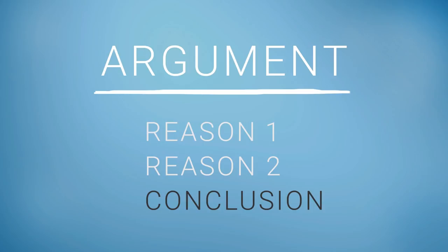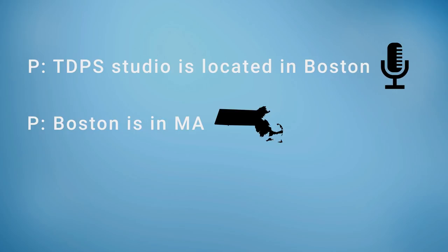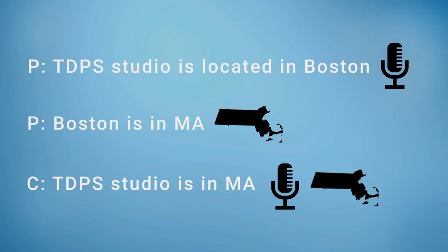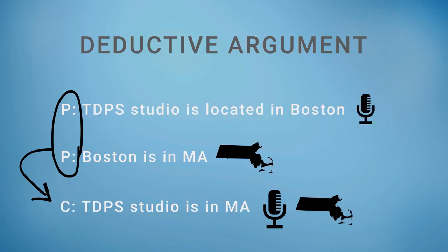The statements of your argument are called premises. Premise: the David Pakman Show studio is located in Boston. Premise: Boston is in Massachusetts. Conclusion: the David Pakman Show studio is in Massachusetts. This is an argument, and also an example of a deductive argument. A deductive argument is one wherein the premises guarantee the conclusion. If our studio is located in Boston and Boston is located in Massachusetts, our studio must be located in Massachusetts.